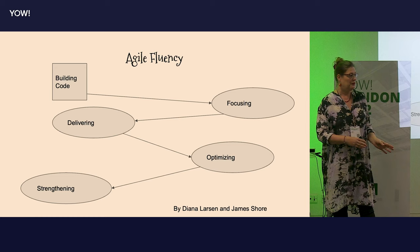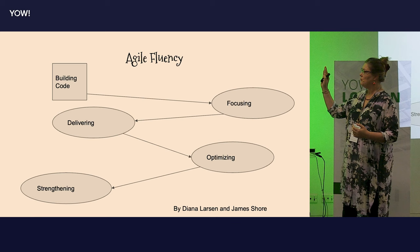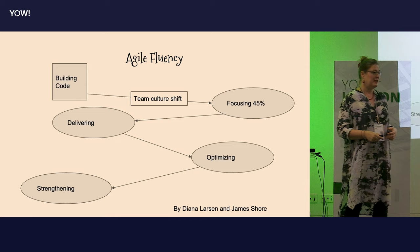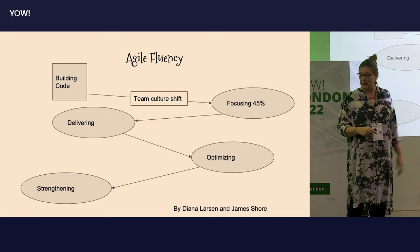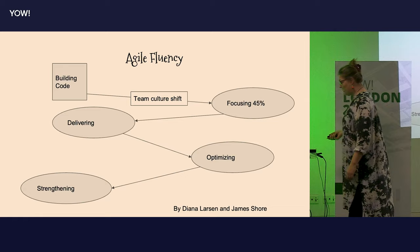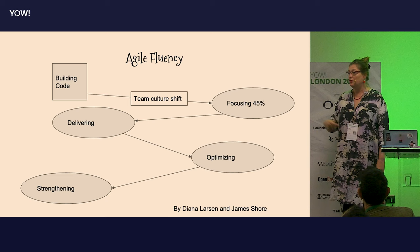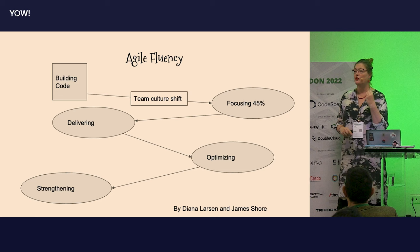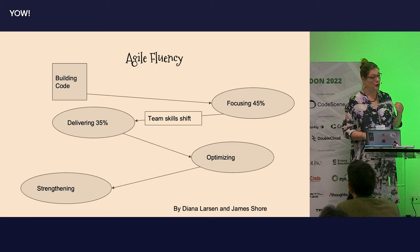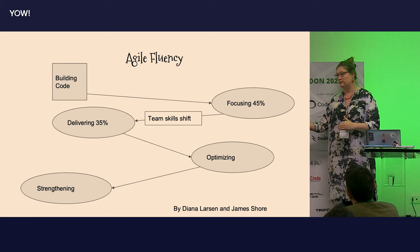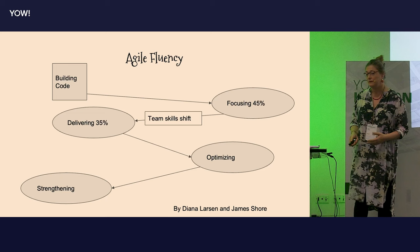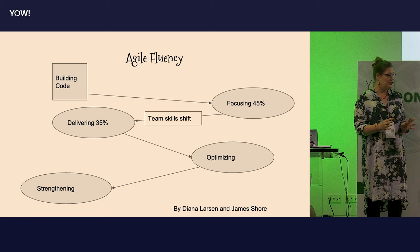The agile fluency is about what fluency level the organization is in. The first level is focusing — 45% of organizations that say they're agile are on this step. You have a team culture shift: you introduce Kanban, maybe Scrum, maybe Spotify, or maybe the non-technical parts of XP like pair programming. This will help you focus on building value, on doing the right thing. Now 35% will go into delivering — the team skills are shifting. You can not just do the right thing, but you can do the thing right. You actually have running software that you can deliver again and again. You have continuous integration. You are more fluent in agile, it takes more to rock the boat, and you're following a lot more of the principles.